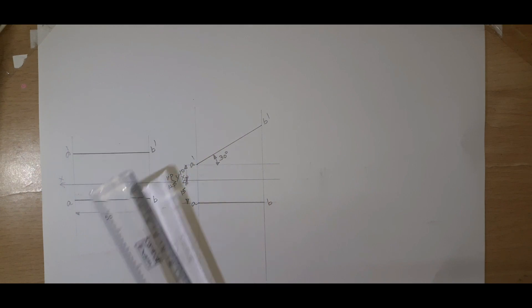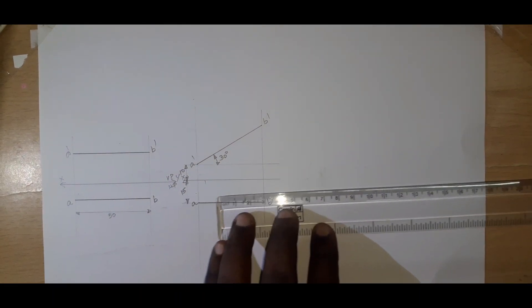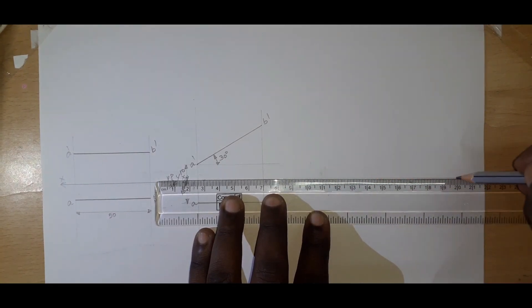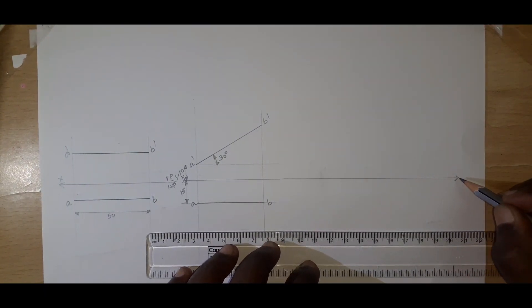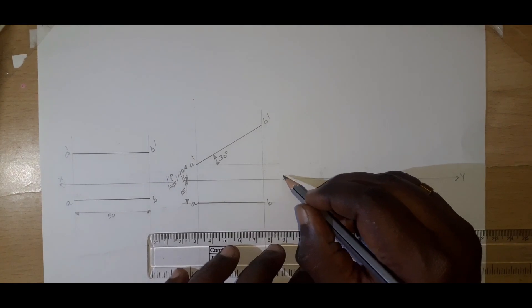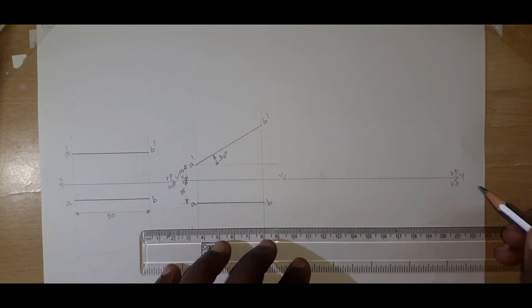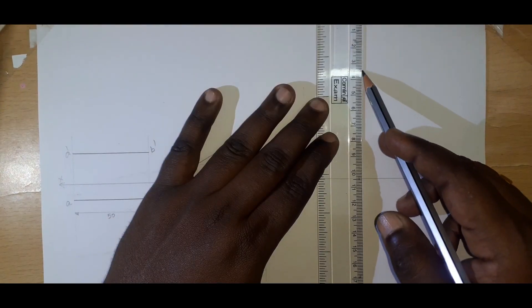First we need to draw the XY line. For the XY line, I have just drawn Y and this is X, and this is VP and this is HP. Here we can draw the line at the center.